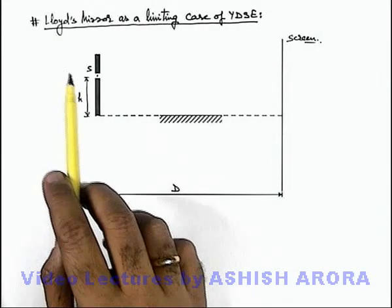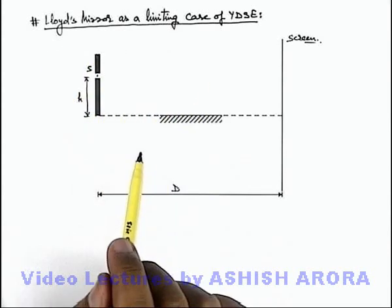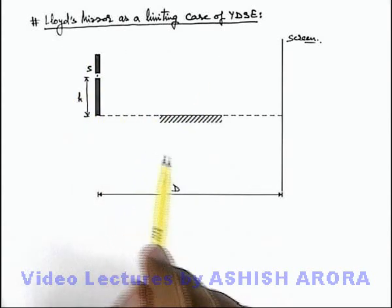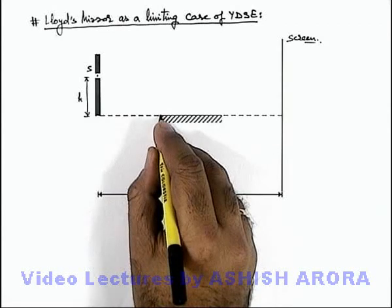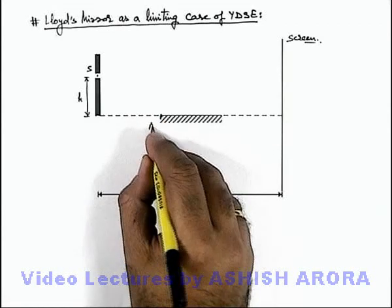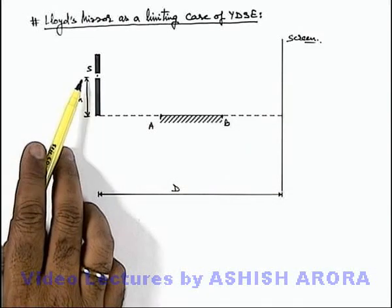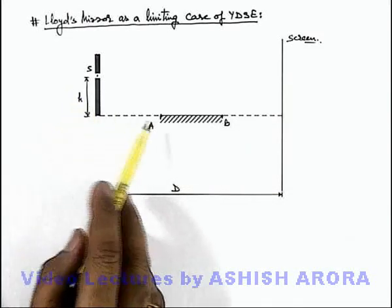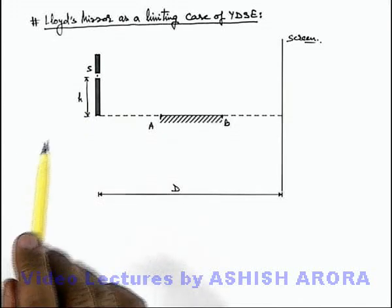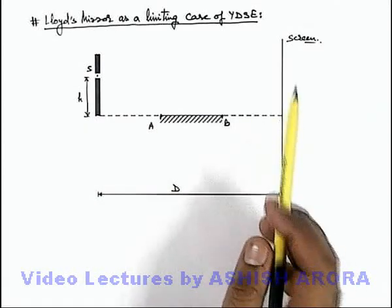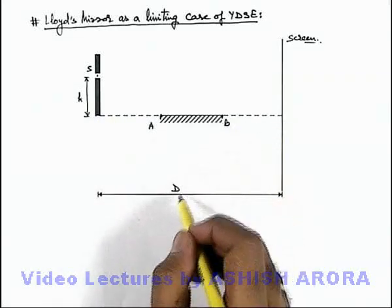Let us now study the situation of Lloyd's mirror as a limiting case of YDSE. Here you can see this is the setup of Lloyd's mirror in which there is a horizontal mirror AB. There is a single slit which is placed at a height h above the plane of the mirror at some separation from it. On the other side of the mirror a vertical screen is placed, and the separation between the slit and screen is D.